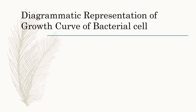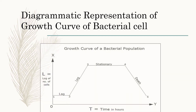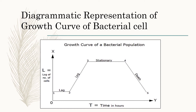Here, with the help of a diagrammatic representation, I have shown the growth curve of a bacterial cell. In the diagram, a plotted graph of the growth curve of a bacterial population is shown. On the x-axis, we have plotted the log of number of cells, and on the y-axis, we have plotted time in hours. You can observe four different growth phases: the first phase is lag phase, second is log phase, third is stationary phase, and fourth is death phase.